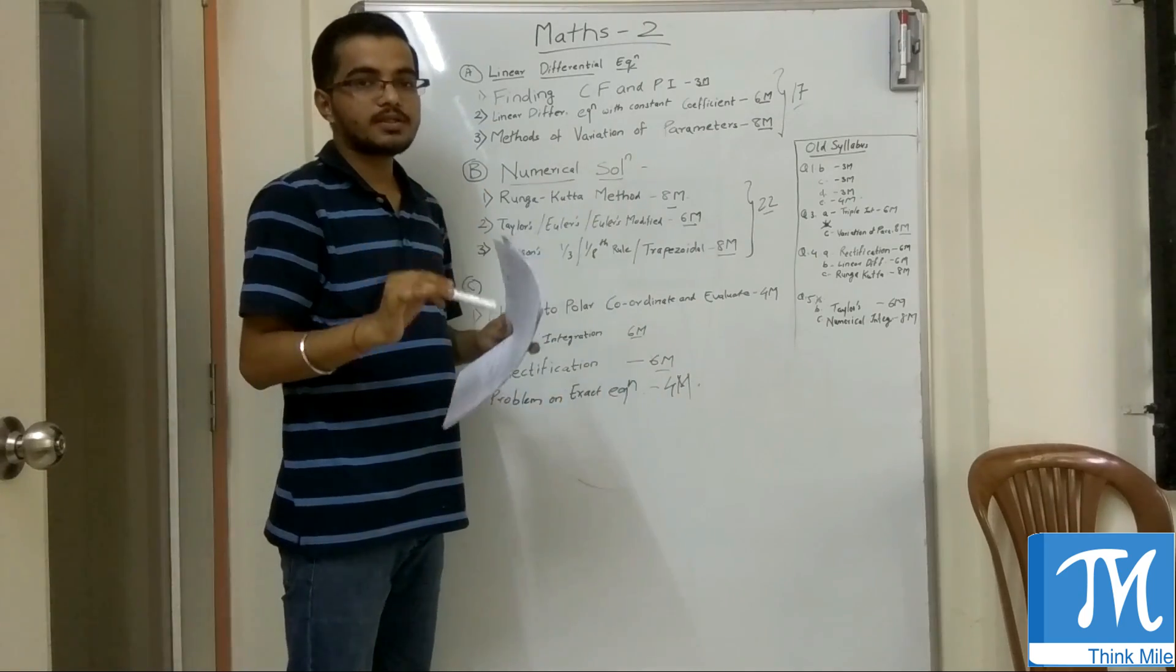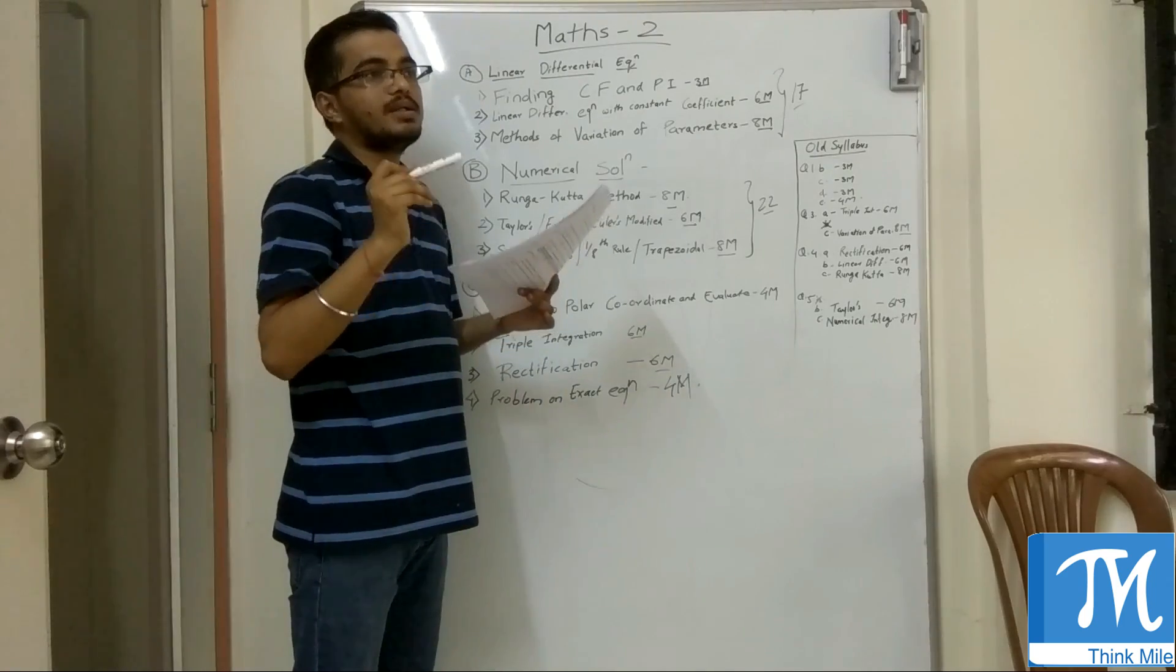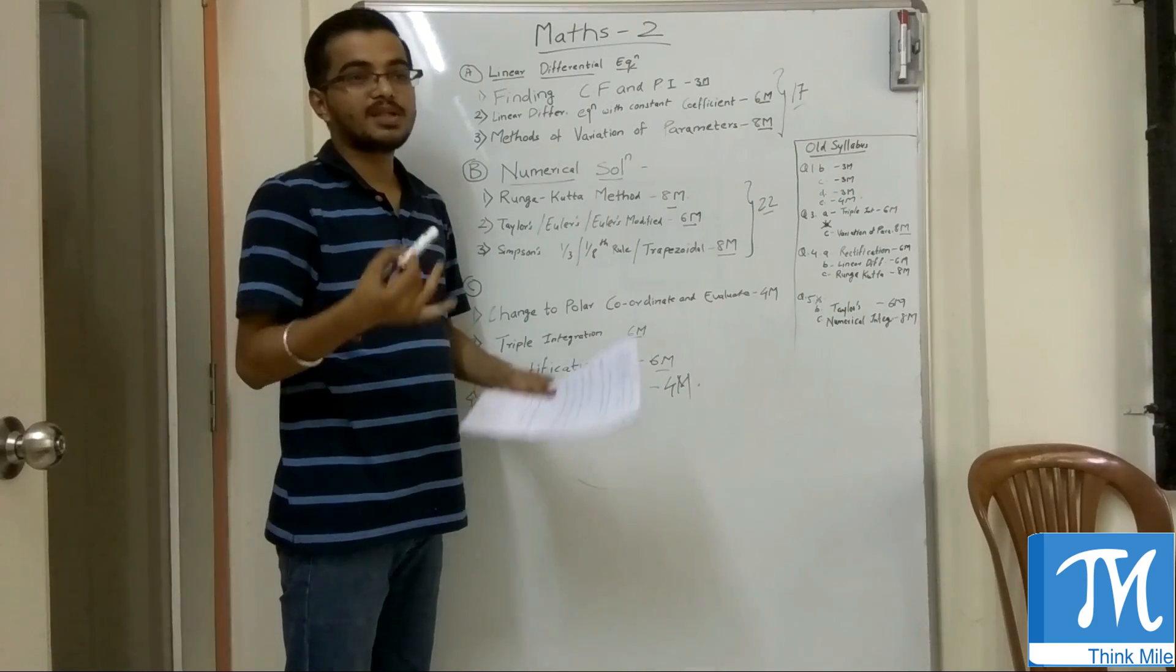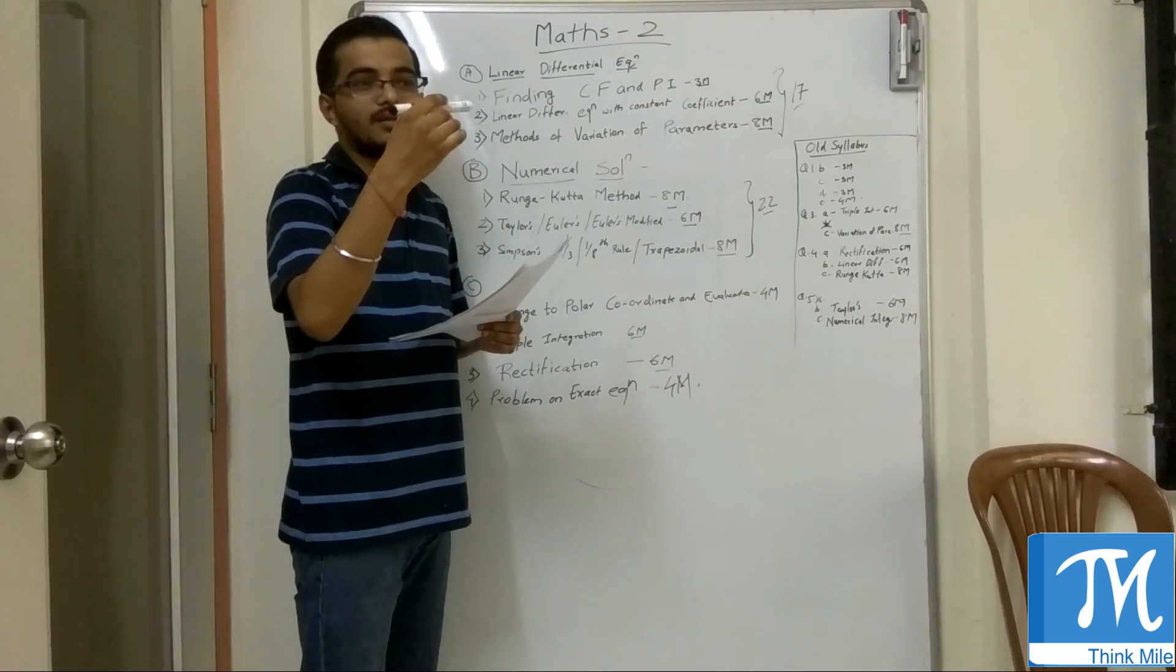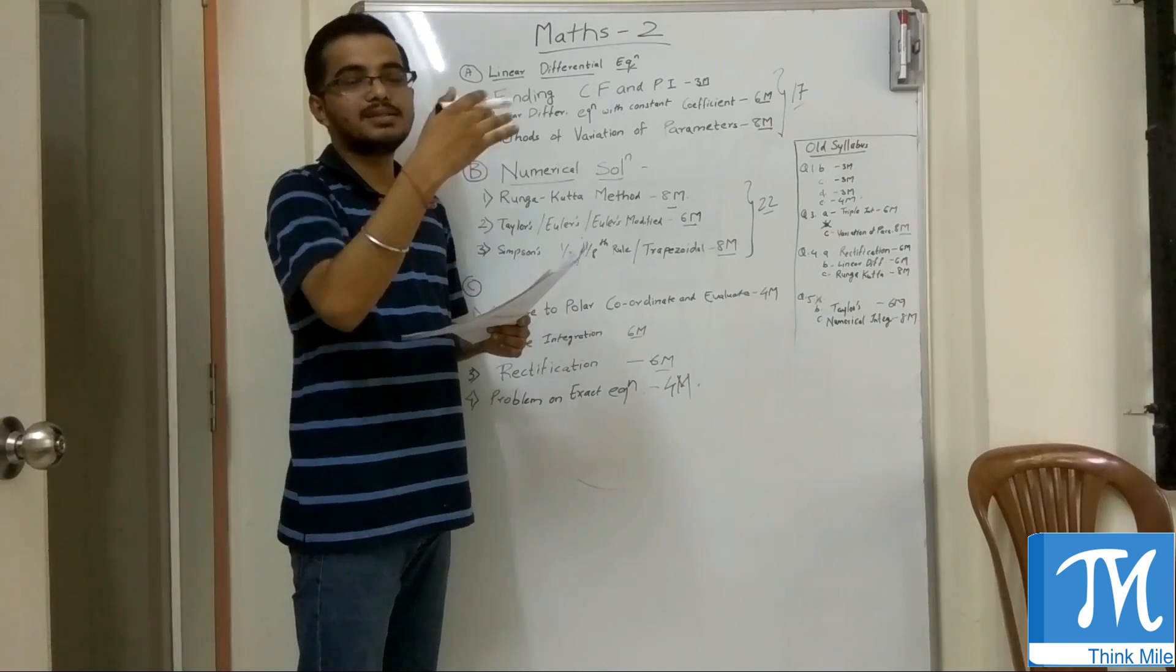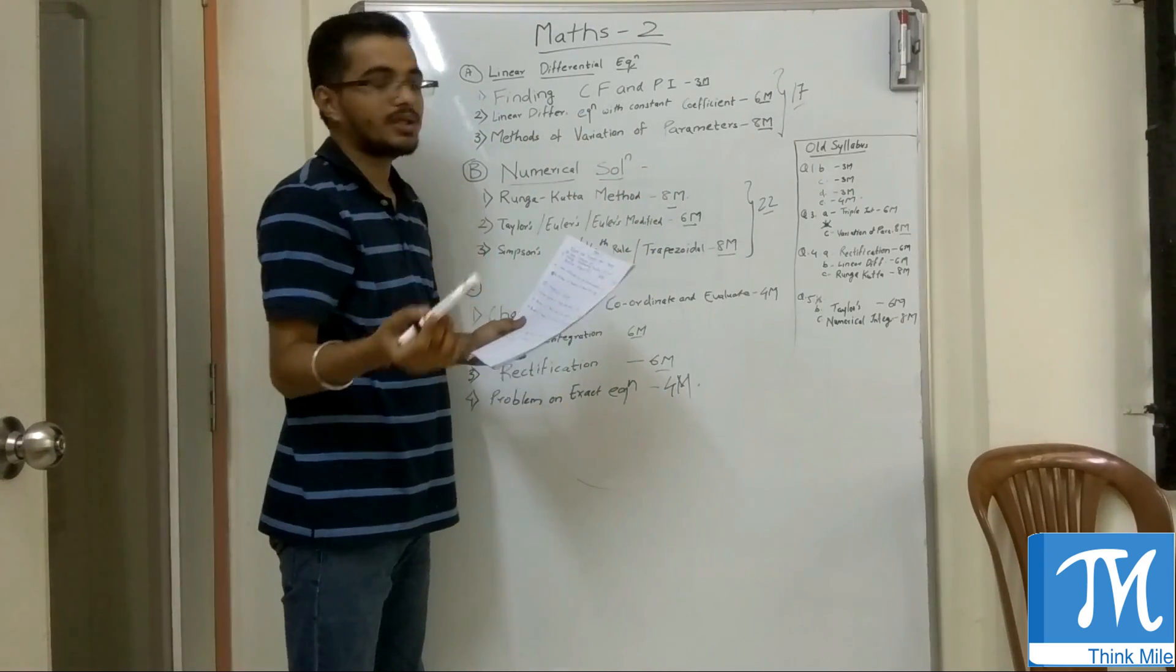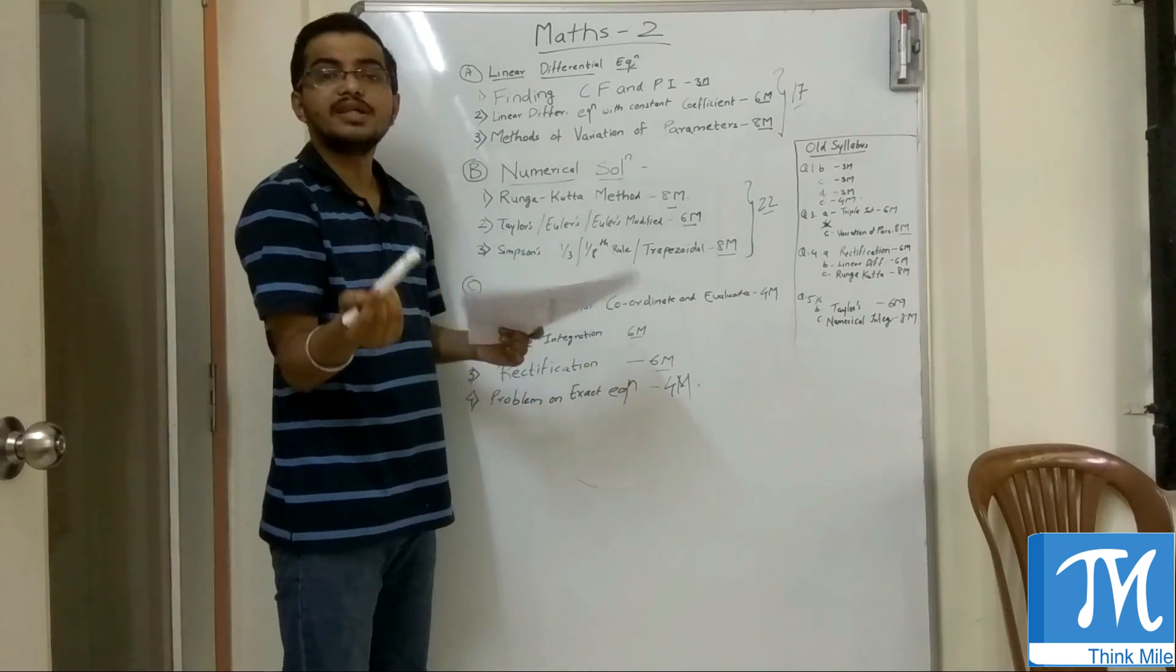Then there is always a fixed question on methods of variation of parameters for 8 marks. There are around 10 to 15 sums in the textbook. You can solve all of them. Many of these sums are almost the same. You have to check out the pattern, what is the essence for everything in the sums. If you do this, it will fetch you 8 marks. All of these 3 questions can fetch you 17 marks.